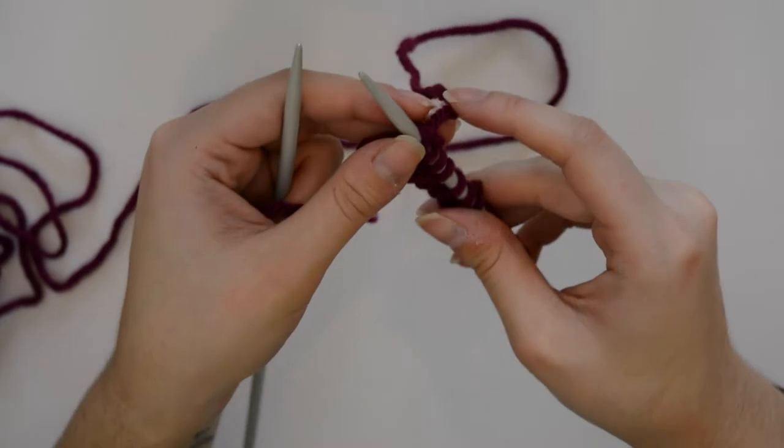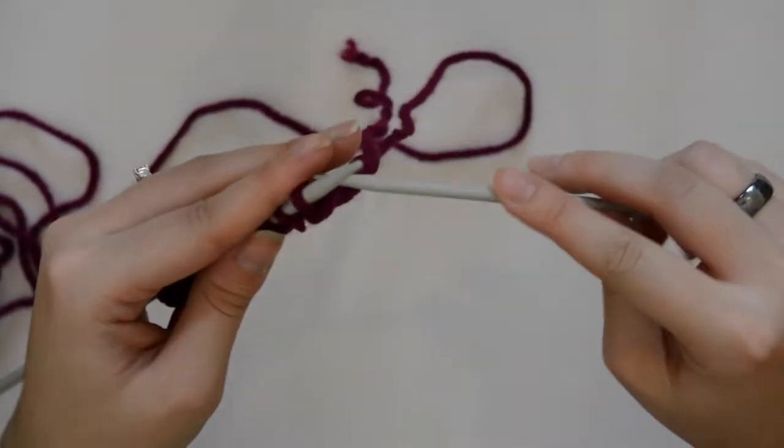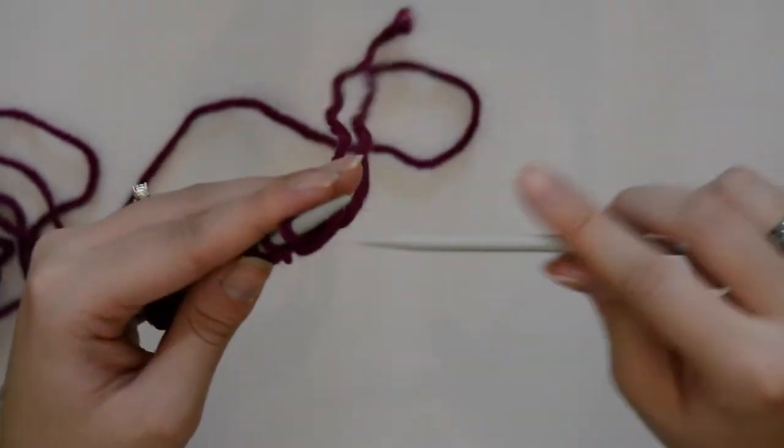And then the wrong side row is simply to purl all stitches. Purl being the opposite of knit.